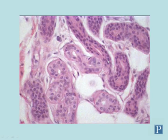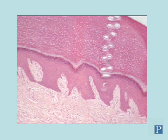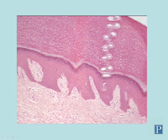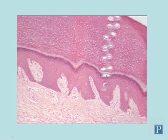Eccrine sweat glands can be found throughout the dermis and hypodermis. In some sections you may see holes through the epithelium — this is where the duct of the sweat gland coils through the epithelium to reach the surface. That's not an artifact but a real structure visible as the duct passes through.